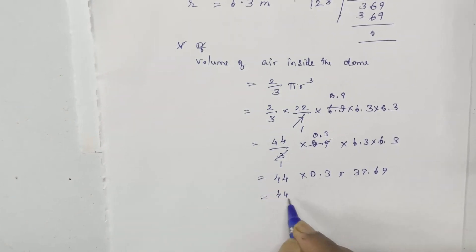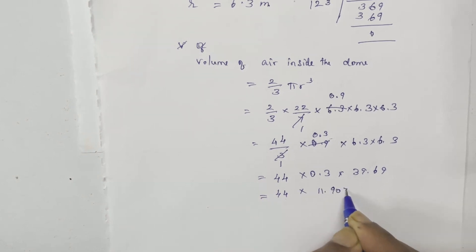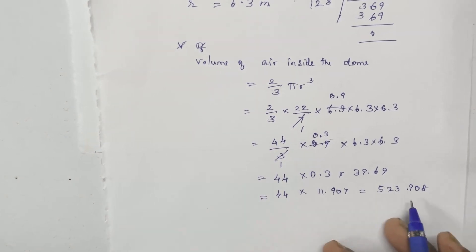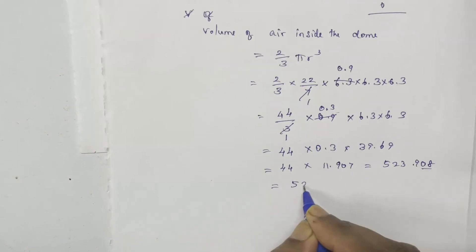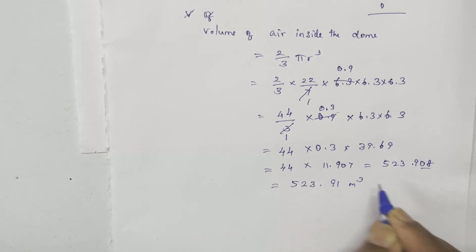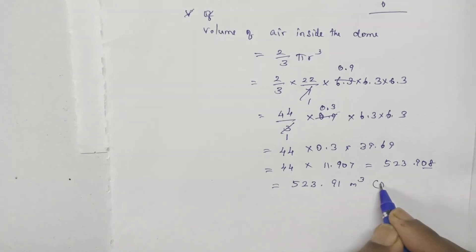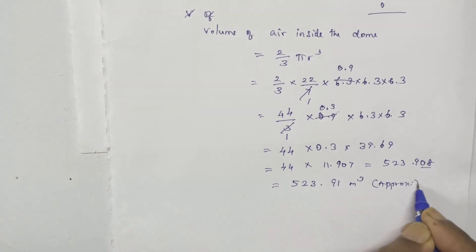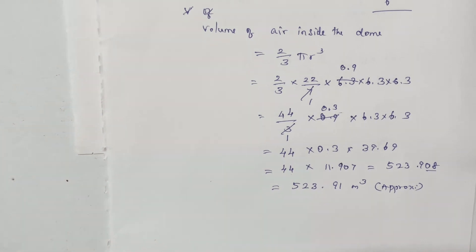This is the approximate value. So the volume of air inside the dome is 523.91 meter cube.